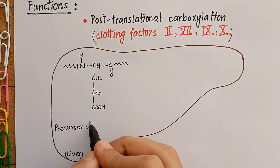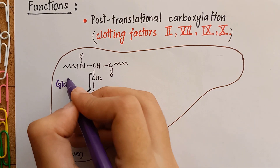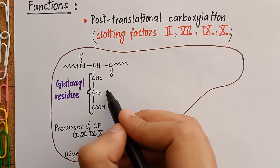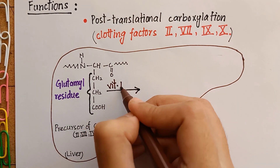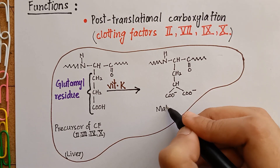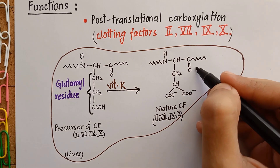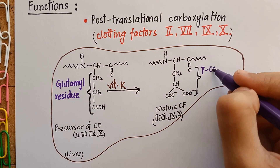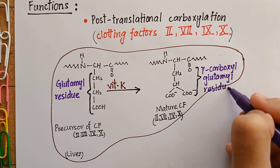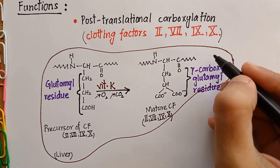These clotting factors are synthesized by the liver as inactive precursor molecules. These inactive precursors of clotting factors contain a glutamyl residue. Vitamin K is required for gamma carboxylation of this glutamyl residue, making a mature clotting factor that is capable of subsequent activation. This reaction occurs in the presence of oxygen and carbon dioxide.